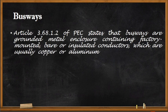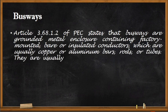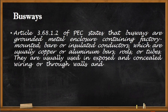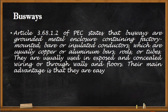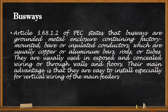The first type is a busway. Article 3.68.1.2 of the Philippine Electrical Code states that busways are grounded metal enclosures containing factory-mounted bare or insulated conductors, which are usually copper or aluminum bars, rods, or tubes. They are usually used in exposed and concealed wiring, or through walls and floors.